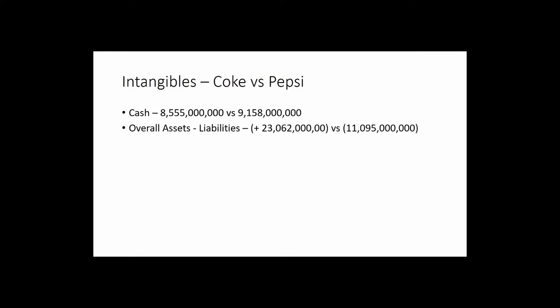Overall assets minus liabilities — this is like a household balance sheet. If you have more liabilities than assets, you're in trouble. Looking at these two: Coke has $23 billion more in assets than liabilities, and Pepsi has $11 billion more in assets than liabilities. Both of these companies are in good standing.